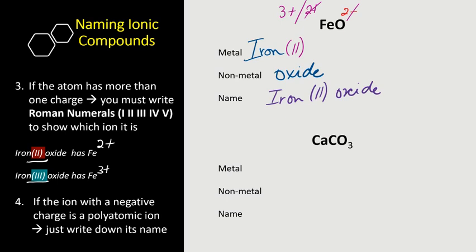CaCO3. Now if the ion with a negative charge is a polyatomic ion, just write down its name. Very simple, they're very easy to name. So we know Ca is calcium, and we know that CO3 is carbonate.